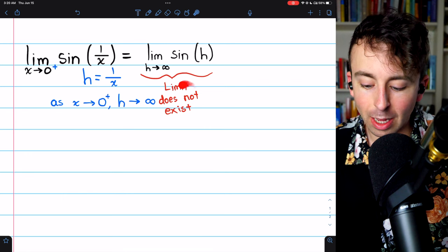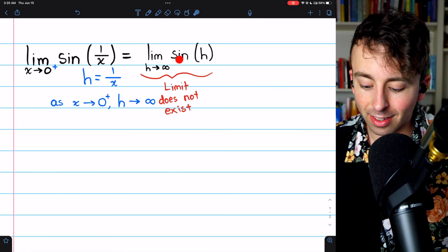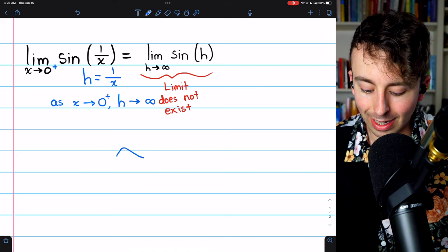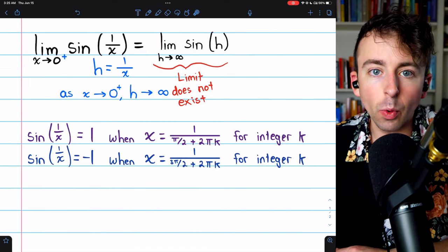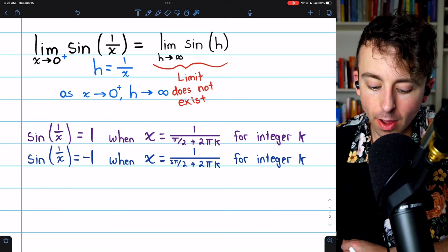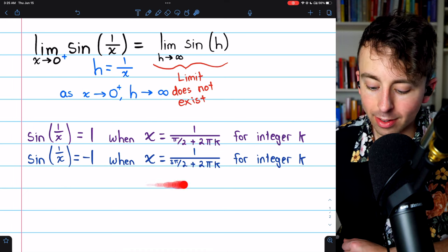Now at a glance, this limit very clearly doesn't exist. Sine of h as h goes to infinity, well clearly that's just going to oscillate. One other, slightly more sophisticated way to think about this limit not existing is to consider this.